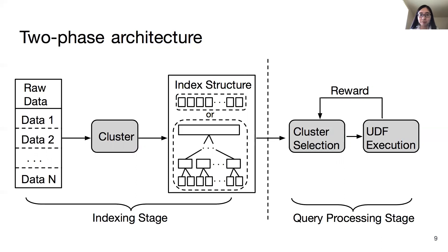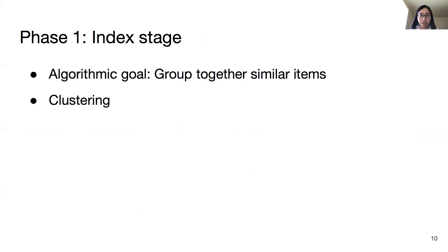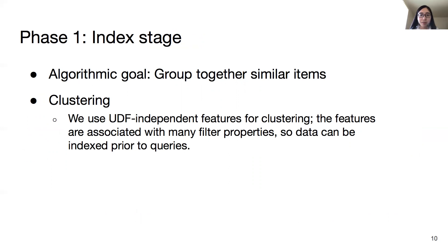Let's go into the details of these two phases. In phase one, similar items are grouped together using clustering. We use UDF-independent features for clustering — for example, pixel values of images. General features are associated with a wide range of filter properties, so the data can be indexed prior to queries. We use off-the-shelf clustering methods such as k-means.